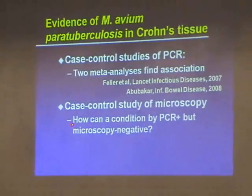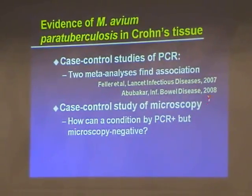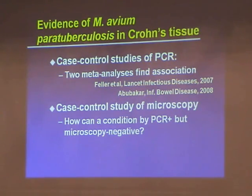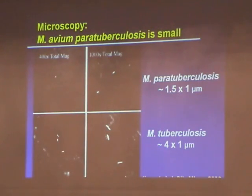At the same time as these PCR methods, our lab took a very retro approach — what about using a microscope? How could a condition be positive by this newfangled PCR method, but since Perl and Crohn's article in 1932, it has never been seen under a microscope? I thought that was a bit of a dilemma. We had done some experimental infections where we put mycobacteria in, so we could investigate this further.